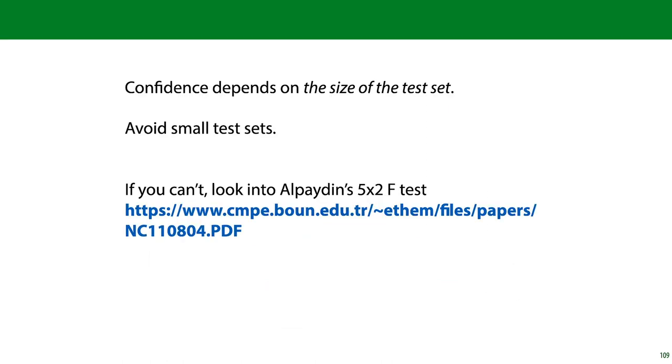So, to summarize, confidence depends on the size of the test set, so we should avoid small test sets. If you don't have the luxury of a large test set, you may need to do some statistical testing to see whether the effect you've observed, classifier A being better than classifier B, is genuine or down to random chance. It's generally accepted that Alpaidin's 5x2 cross-validation is the best test for this purpose. It's out of scope for this course, but follow the link if you run into this problem.